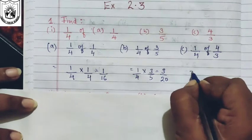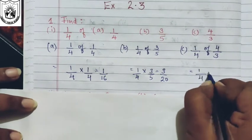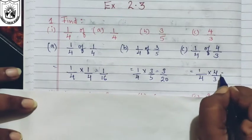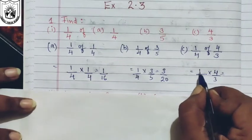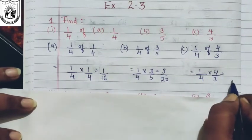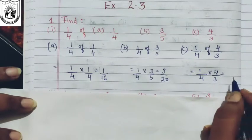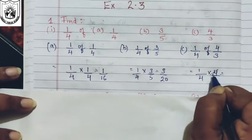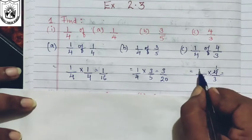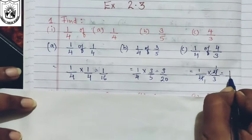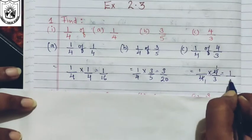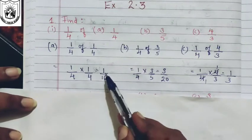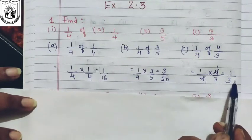Third one — see here: one-fourth multiplied by four upon three. You can multiply to get four on top and twelve below, then simplify, or you can see that four and four can be cancelled. So one times one is one, and the denominator is three. So you check if there are common factors — you can cancel them. If not, then leave it.